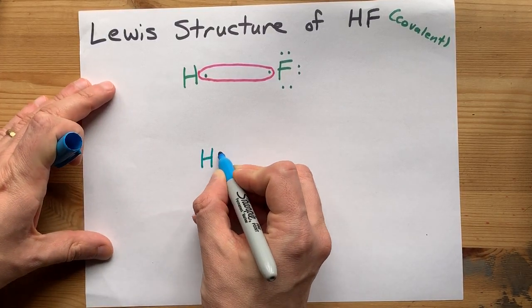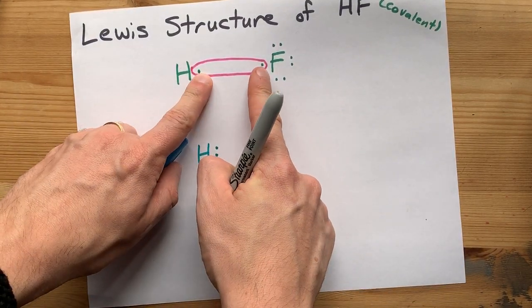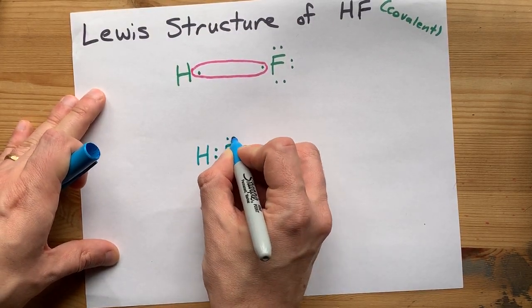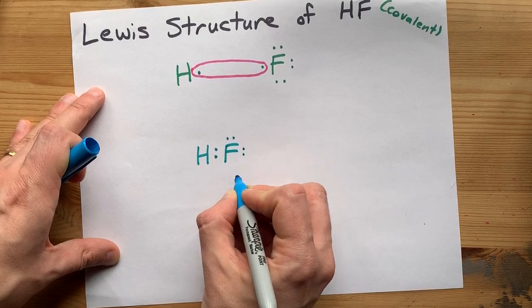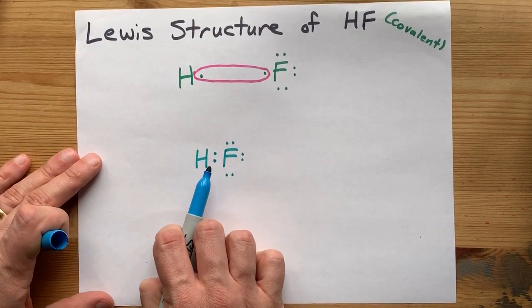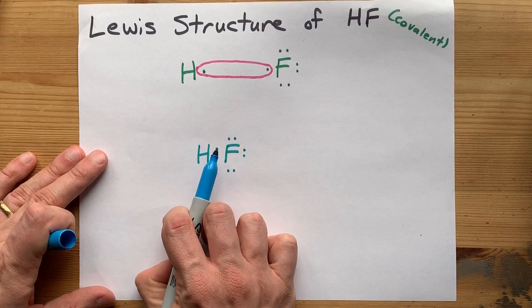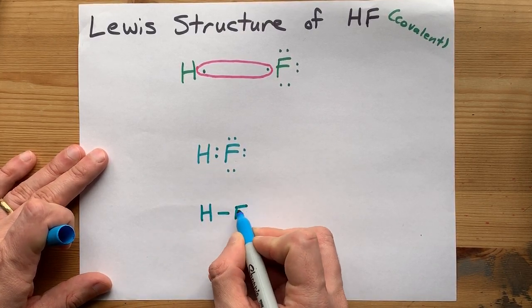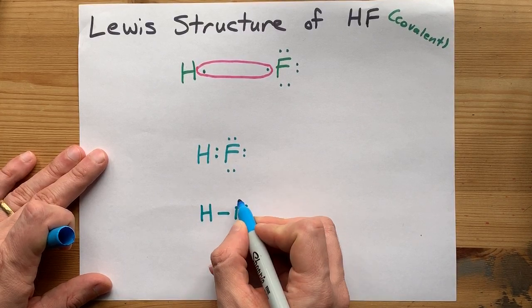The hydrogen and the fluorine share their unpaired electrons. The fluorine still has its other six electrons around it, and what we do conventionally is replace bonding pairs of electrons with single lines. There we go. This is HF.